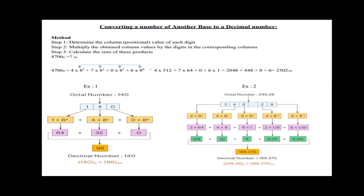Let's look at one example. We will convert the octal number 4706 to decimal. Base is 8, so we find the place value: 4 into 8 raise to 3, plus 7 into 8 raise to 2, plus 0 into 8 raise to 1, plus 6 into 8 raise to 0. The value is 2502 base 10.